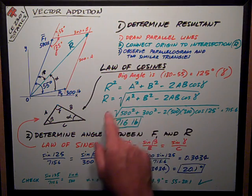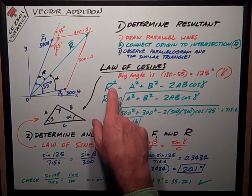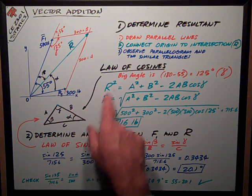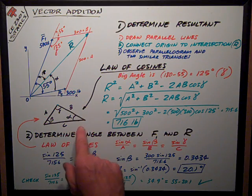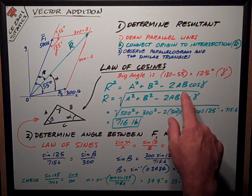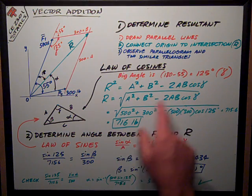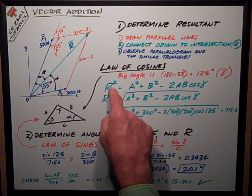The law of cosines states that the length of one side squared is equal to the sum of the squares of the other two sides minus two times those two lengths times the cosine of the opposite angle from the side I'm trying to get.